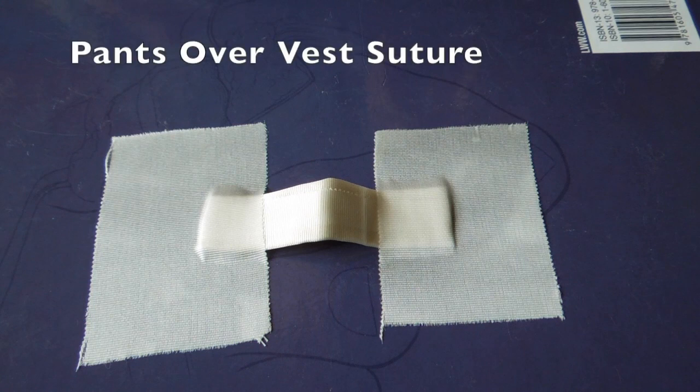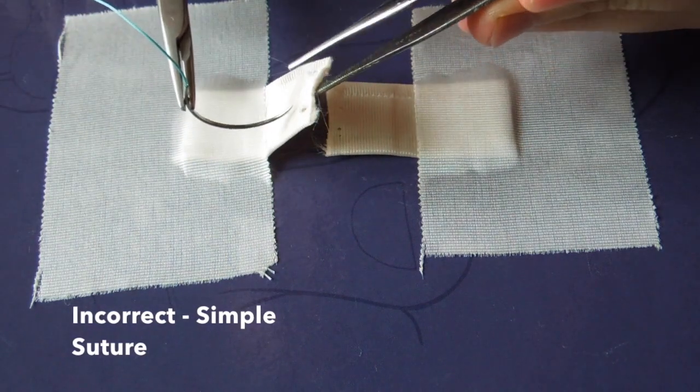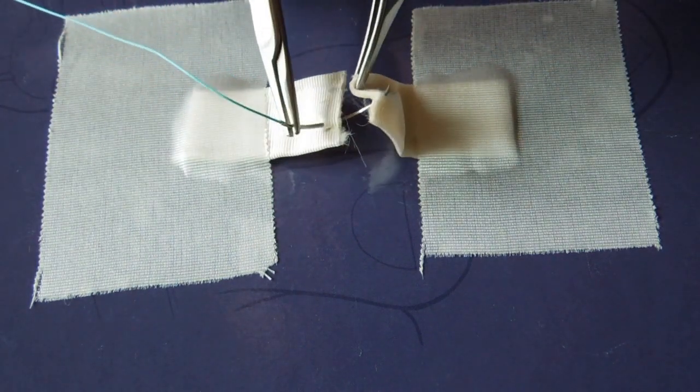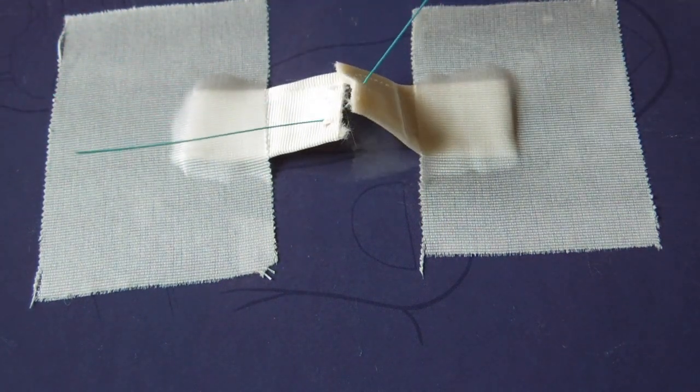This is a tutorial for a pants over vest suture. First, to emphasize why we do a pants over vest, here we're going to take two sides of a tissue and attempt to re-approximate them with a simple suture.